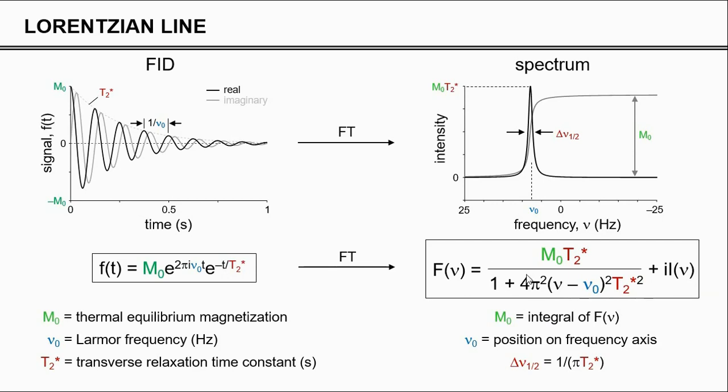In a future lecture on signal processing, we will talk in much more detail about this. But most important right now is that you recognize that the three parameters, M0, frequency and T2 star, are present in the time domain and in the frequency domain. There is no new information. You just display the existing information in a different way. This is underlined by the fact that the Fourier transformation is an inverse operation, a reversible operation. The inverse Fourier transformation takes the spectrum and brings it back to the time domain, showing that you don't add any information.